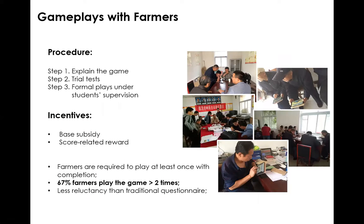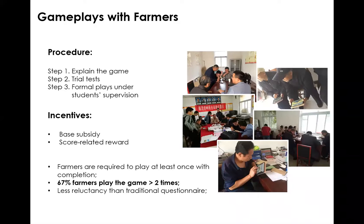During the field survey, our procedure consisted of three steps: first, students explain the game; then we do a very short trial test so farmers understand the general rules; and then we start the formal play with students supervising progress. Similar to questionnaires, we also pay some compensation for occupying their working time, but in this case the compensation amount links to their game performance — the better they play, the more money they get — which motivates them to finish the game. In the end, most farmers were able to complete the game at least once, and more than 50% — actually 67% of farmers — played the game more than two times. The atmosphere was quite relaxed compared to face-to-face questionnaire surveys.